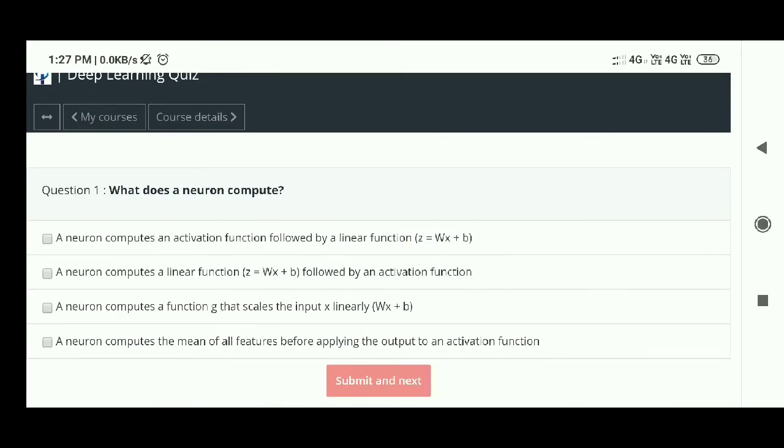First question: What does a neuron compute? The answer is - a neuron computes a linear function followed by an activation function.